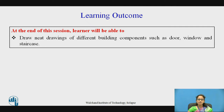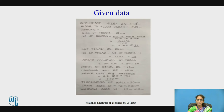These are the learning outcomes. At the end of this session, students will be able to draw neat drawings of different building components such as doors, windows, and staircases. There are different types of building components, and we are going to discuss the staircase. Staircase types include the dogleg staircase, the straight staircase, the open well staircase, and the bifurcated staircase. The dogleg staircase is used in residential buildings, commercial buildings, and any type of public building.